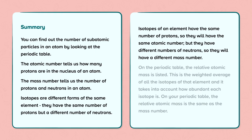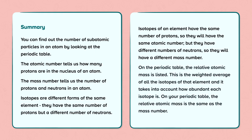Isotopes of an element have the same number of protons so they will have the same atomic number, but they have different numbers of neutrons so they will have a different mass number. On the periodic table the relative atomic mass is listed — this is the weighted average of all the isotopes of that element, taking into account how abundant each isotope is. On your periodic table the relative atomic mass is the same as the mass number.